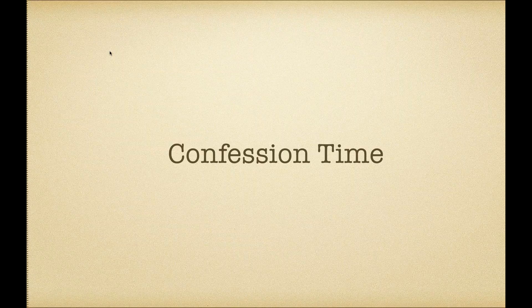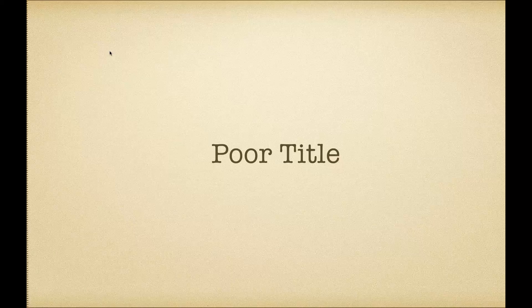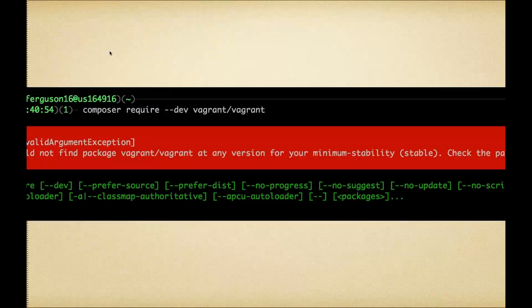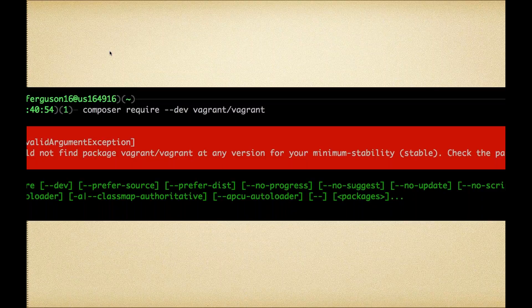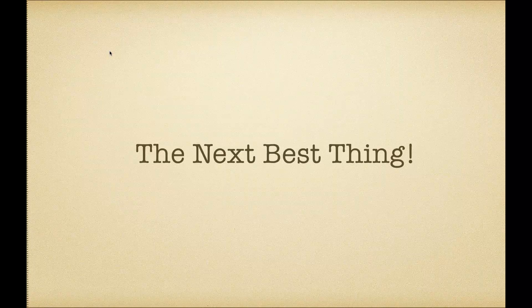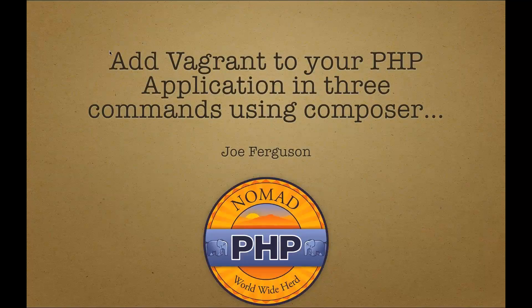I have a little confession: when I titled this talk, I wasn't really sure what I was thinking. It probably wasn't a great title. If you go by the title, you can't really Composer require Vagrant — you can't install Vagrant with Composer, at least not any of the ways I tried. So to own up to that and give you something better, the next best thing is I'll show you how to add Vagrant to your PHP application in three commands using Composer and some other things.